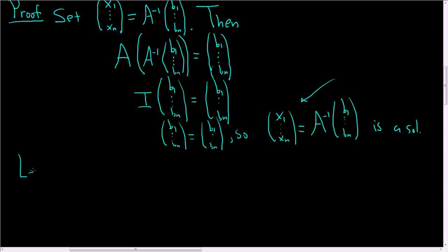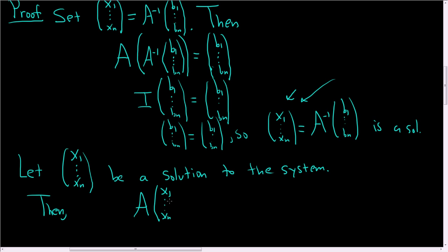So now let x1 dot dot dot x sub n be a solution to the system. And we simply have to show that it's equal to this. So because it's a solution to the system, that means that we have A times x1 dot dot dot x sub n equal to B1 dot dot dot B sub n. Okay?